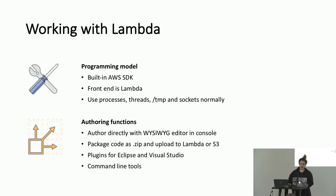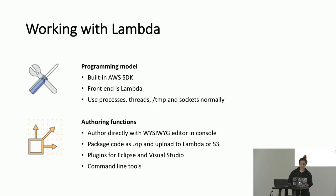The AWS SDK is built in already. You can use processes, threads, temp, and sockets the same way you normally would. A couple ways of authoring functions: you can write them right in the console — there's a little editor and you can go through writing, testing, and debugging all in the console. You can also package your code as a zip file and upload to Lambda or S3. There are plug-ins for some IDEs and command line tools too — work with and author functions whichever way works for you.